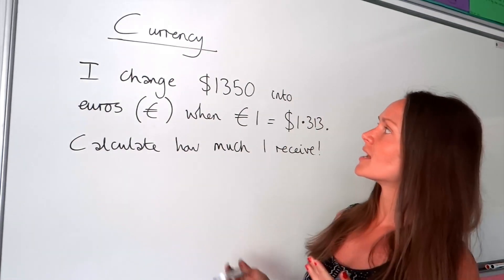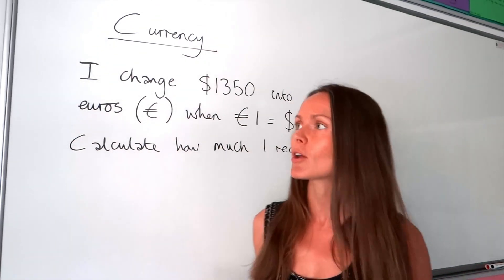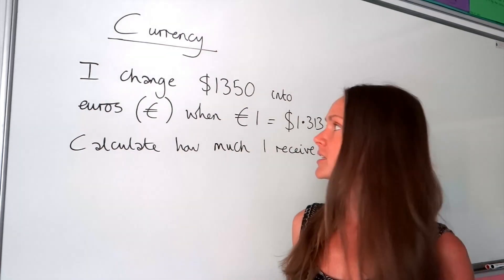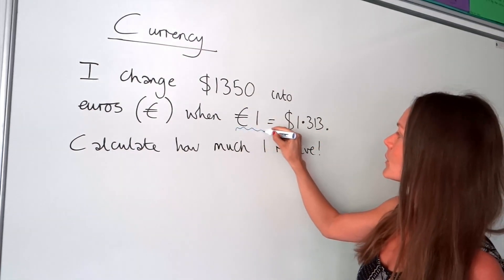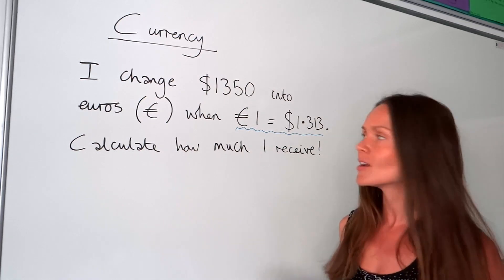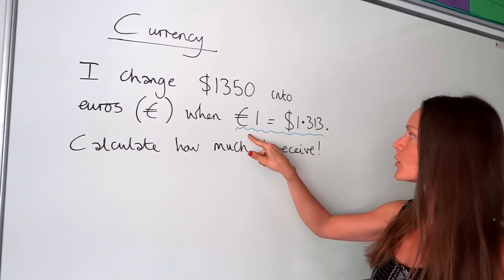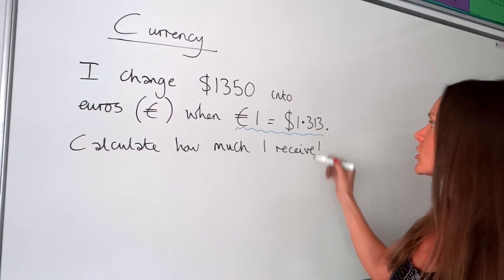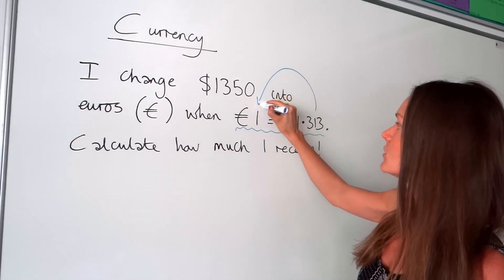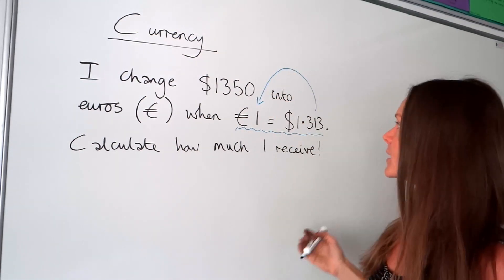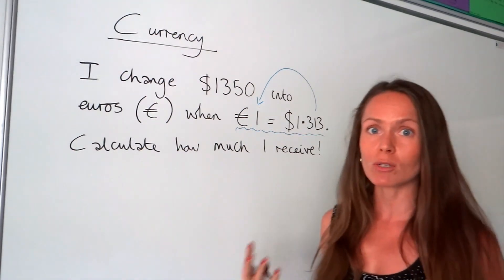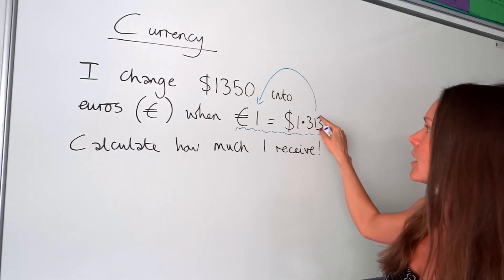I'm going to pretend I'm changing dollars into euros. I've got $1350 that I'm going to turn into euros and this is what we call the exchange rate. For every one euro, I'll get $1.313. In this question, we're changing dollars into euros, so I need to work out whether I'm going to be multiplying or dividing by this number here.